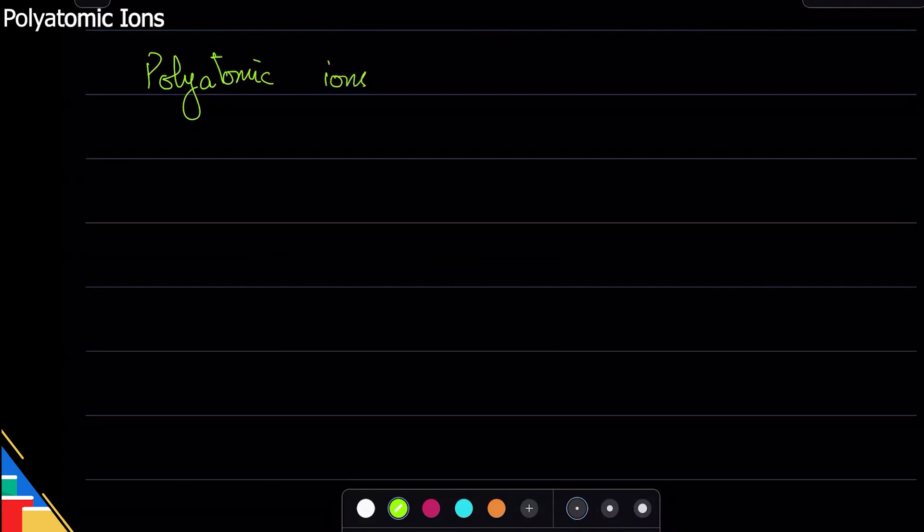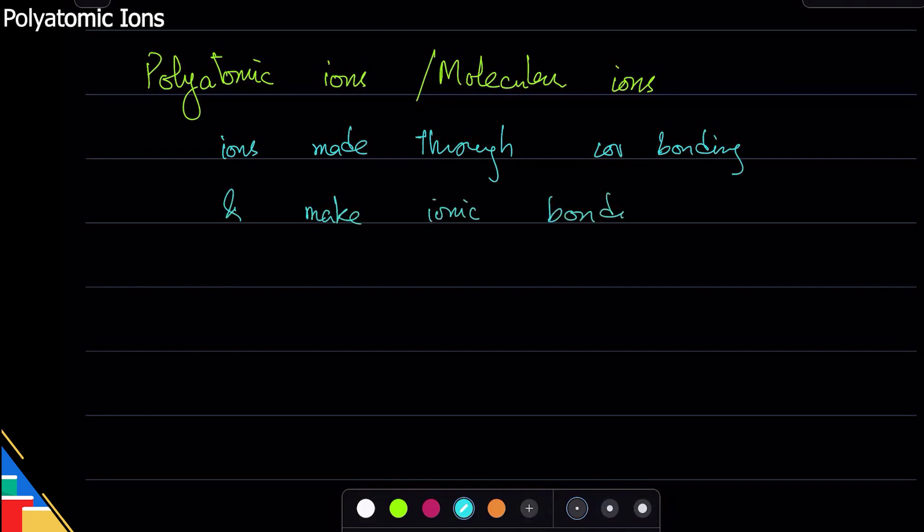Now I'm going to introduce you to what we call polyatomic ions. These are also called molecular ions. They are interesting because they have covalent bonding, but they make ionic bonds. So ions made through covalent bonding that make ionic bonds. That's very interesting - they have two kinds of bonding when you make them in a compound.